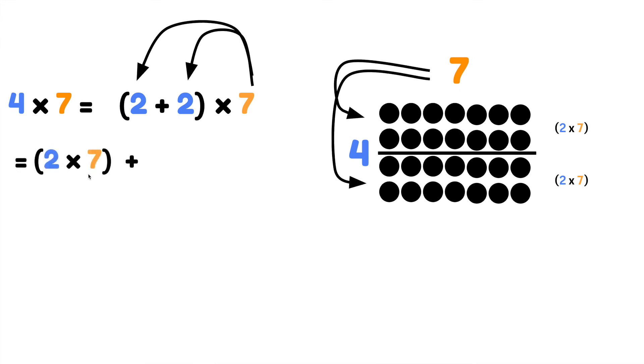So we can write 2 rows of 7 plus 2 rows of 7. We know our doubles. 2 times 7 is 14 and we have 2 more rows of 7 below, which is also 14. 14 plus 14 equals 28. So 4 times 7, it has a product of 28.